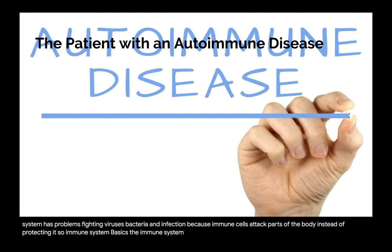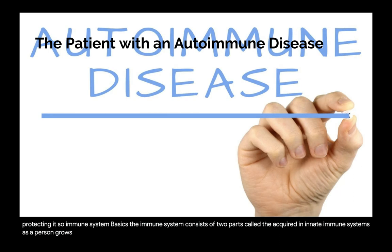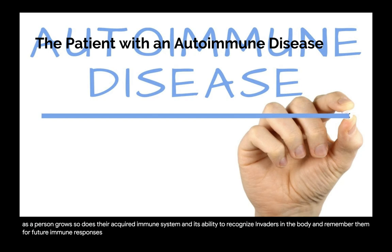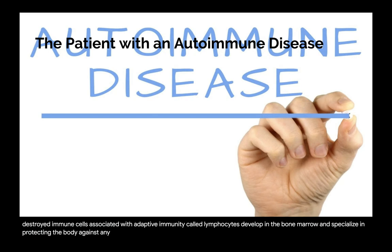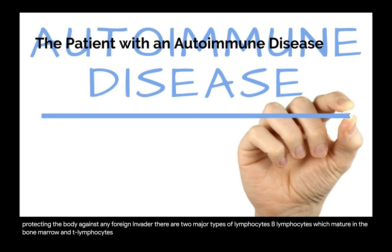The immune system consists of two parts: the acquired and innate immune systems. As a person grows, so does their acquired immune system and its ability to recognize invaders and remember them. Acquired immune cells activate antibodies to destroy invaders. Lymphocytes — immune cells associated with adaptive immunity — develop in the bone marrow. There are two major types: B lymphocytes, which mature in the bone marrow, and T lymphocytes, which mature in the thymus.